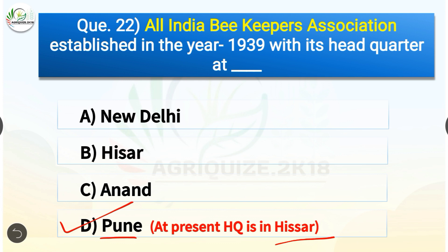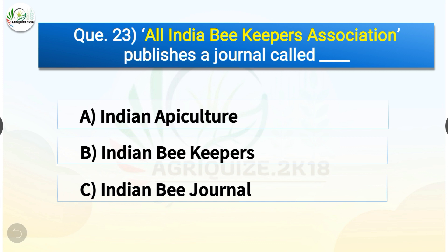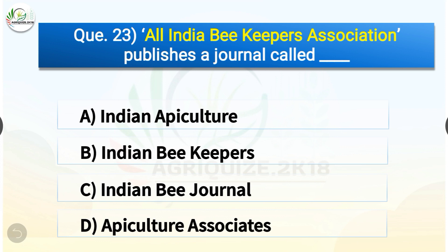Question number twenty-three: All India Beekeepers Association publishes a journal called what? The options are: Indian Apiculture, Indian Beekeepers, Indian Bee Journal, or Apiculture Associates. The correct answer is option C — Indian Bee Journal. All India Beekeepers Association publishes a journal called Indian Bee Journal.